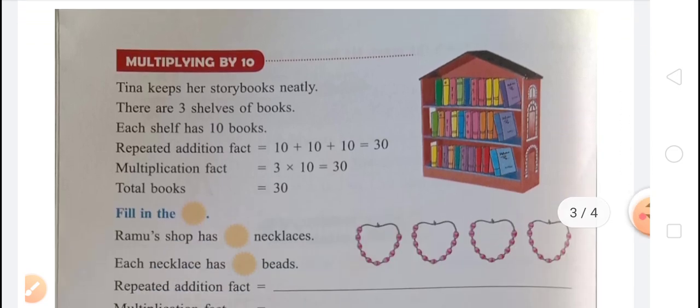Now come to the next topic: multiplying by 10. Tina keeps her storybooks neatly. She keeps her storybooks in 3 shelves, and each shelf has 10 books. So the repeated addition fact will be: in the 1st shelf there are 10 books, in the 2nd shelf 10 books, and in the 3rd shelf 10 books. So repeated addition fact will be 10 plus 10 plus 10. That means 10 is added 3 times to make 30. And multiplication fact will be 3 multiplied by 10 equals 30.